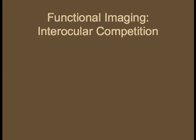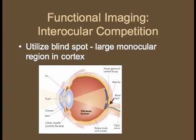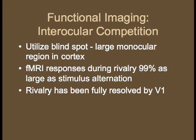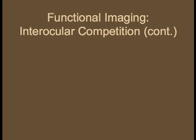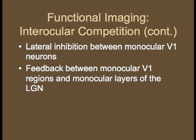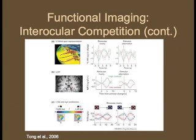Interocular competition predicts that rivalry arises from inhibition between monocular neurons, such as those in the LGN or V1. To study this, Tong et al., 2001, utilized the blind spot, which is represented by a large monocular region in the cortex. In this region, fMRI responses during rivalry are 99% as large as physical stimulation. This implies that rivalry has been fully resolved by V1 and supports interocular competition. The authors propose two ways that interocular competition may occur: first, lateral inhibition may occur between monocular V1 neurons; second, feedback may occur between monocular regions of V1 and the LGN. In support of this, fMRI studies show strong rivalry in the LGN and V1.